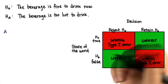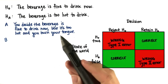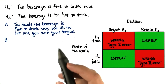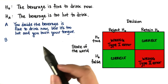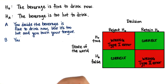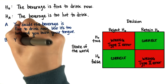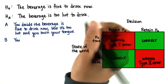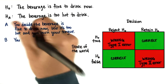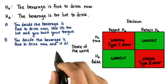So now four things can happen. One thing — which often happens to me because I'm hasty — is you decide the beverage is fine to drink, but then it's too hot and you burn your tongue. Another thing that could happen is you decide that the beverage is fine to drink, and indeed it is, and then you enjoy drinking it.